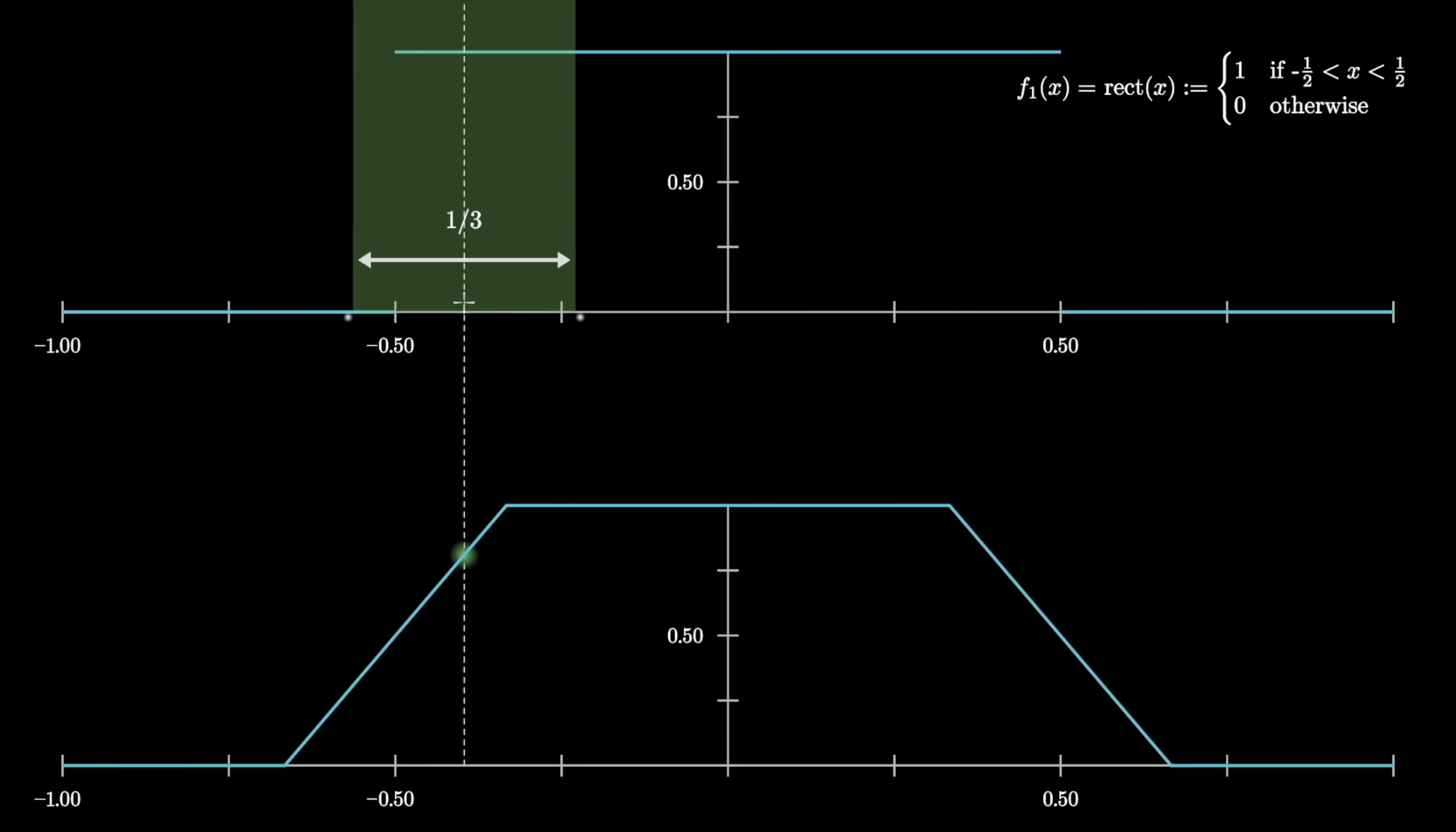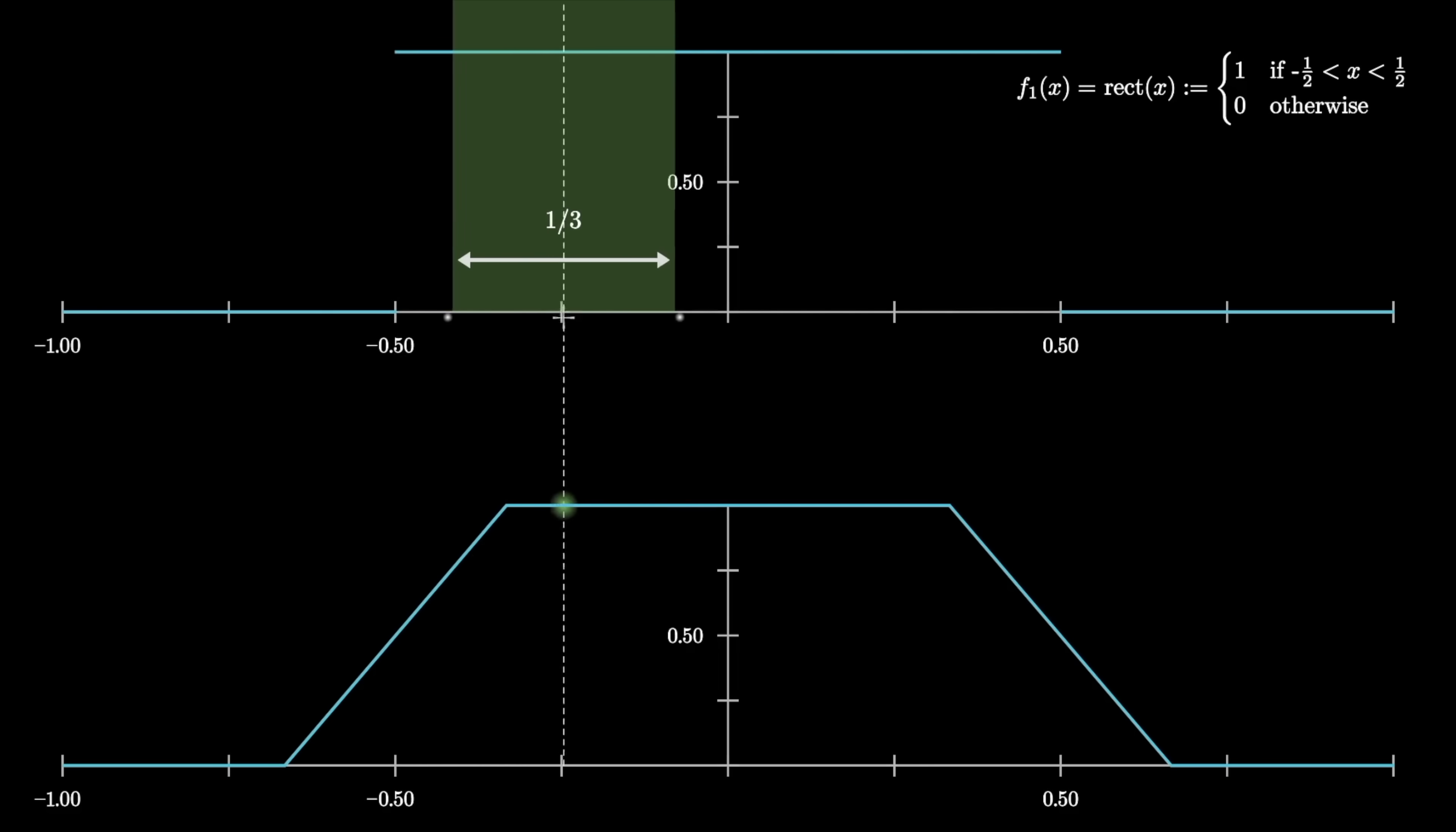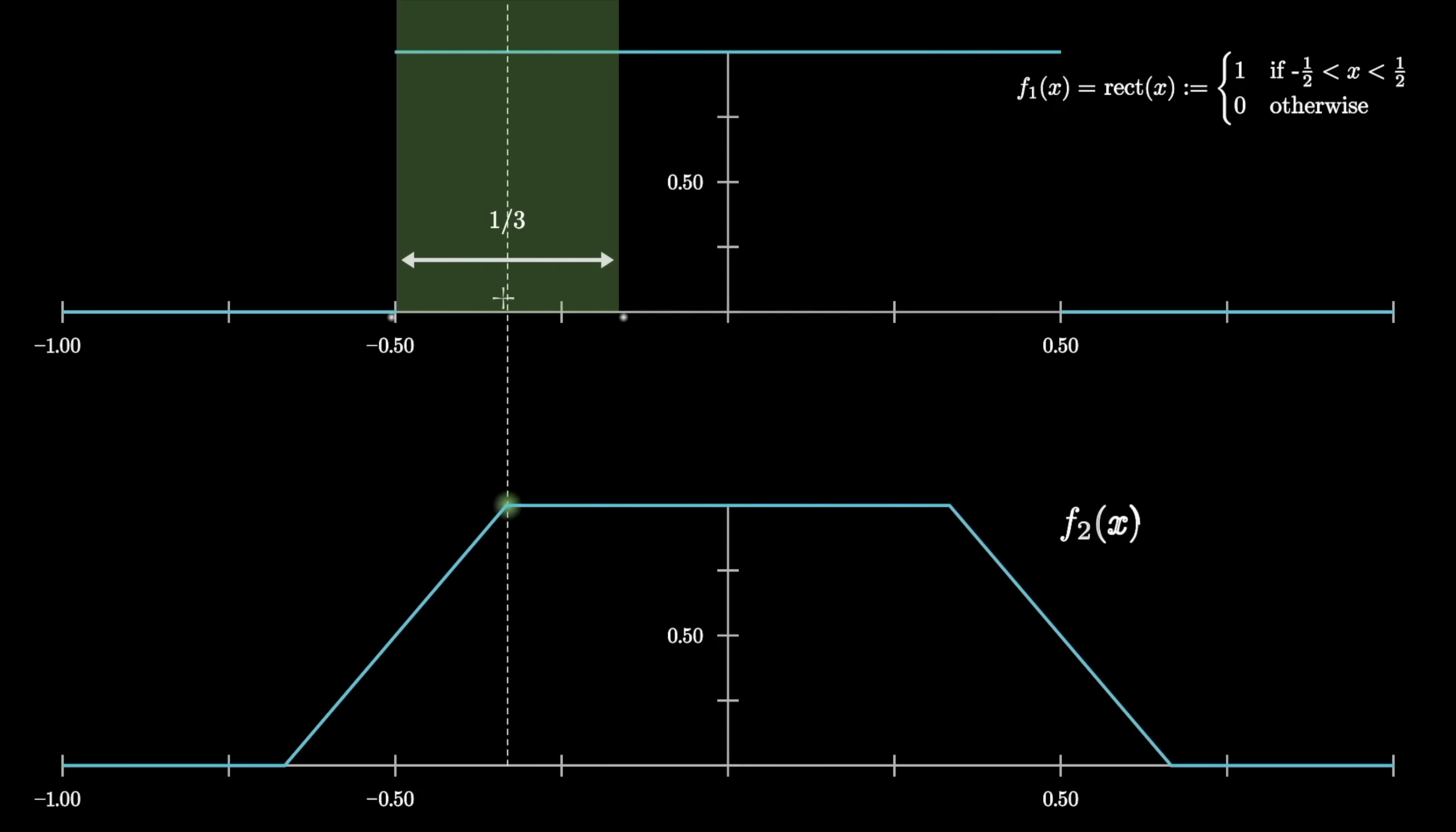The important thing I want you to focus on is how when that window is entirely in the plateau above, where all the values are 1, then the average value is also 1, so we get this plateau on our function at the bottom. Let's call this bottom function f2 of x, and what I want you to think about is the length of the plateau for that second function. How wide should it be?